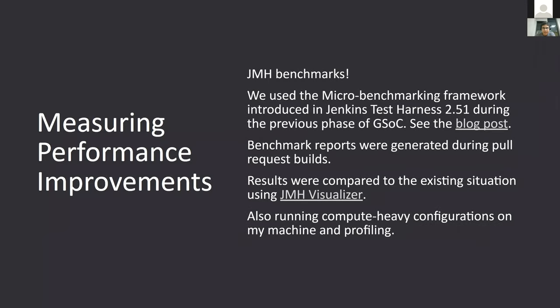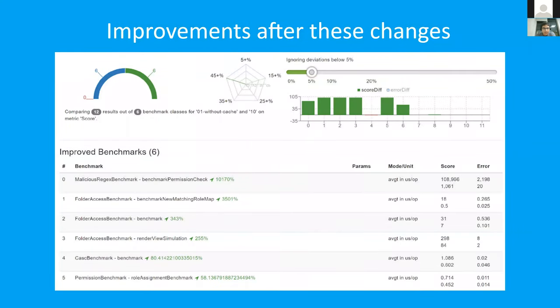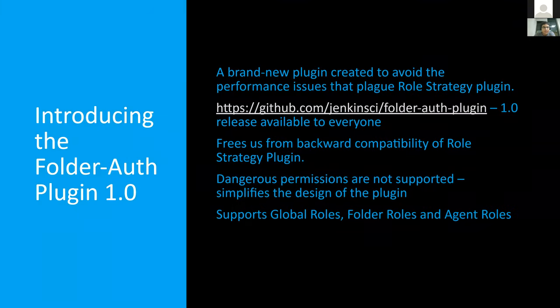We measured the performance improvements using the benchmark framework and visualized them using JMH Visualizer. After all of these changes, we were able to achieve performance improvements of about 10,000 percent in our test cases. These included both synthetic benchmarks and user-provided benchmarks, and we covered them all.